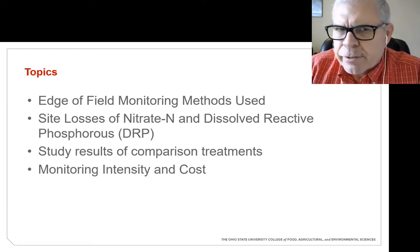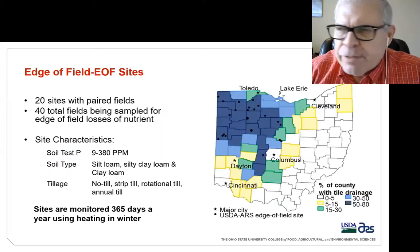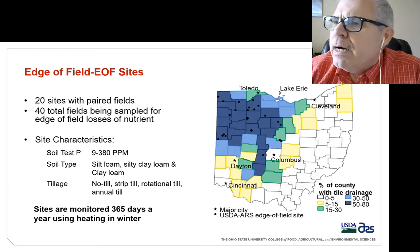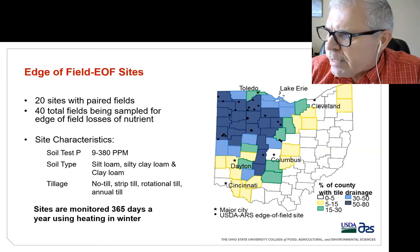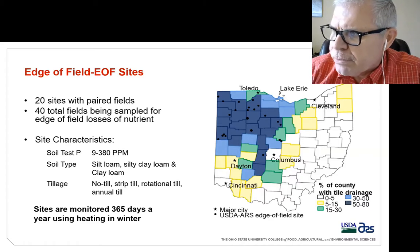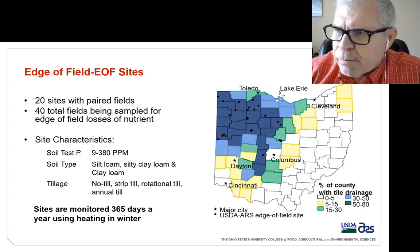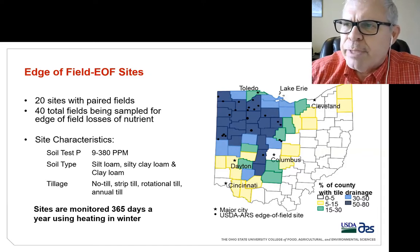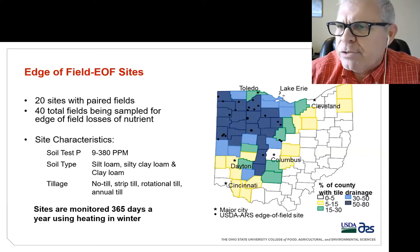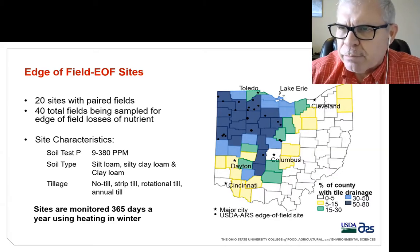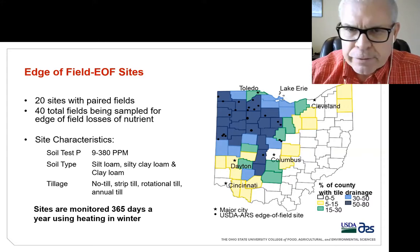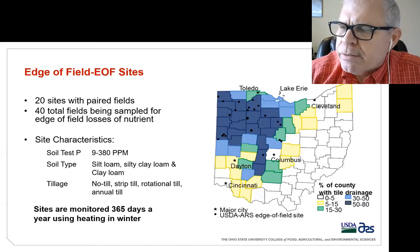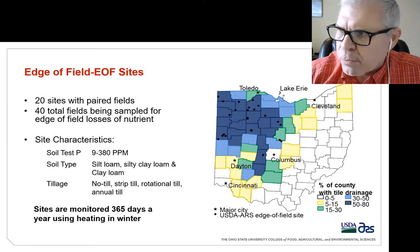Here in the state of Ohio, we have edge-of-field sites located where the black dots are, representing the intensively tiled area of the state. We have 20 sites being monitored using a paired field design — two fields at each site — providing comparison of practices. Those sites have a wide range of characteristics, with soil tests ranging from 9 to 380 parts per million. They represent mainly the northwest Ohio lake bed soils, which are the main production area in that region.